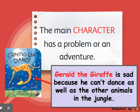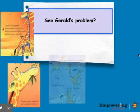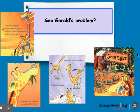The main character has a problem or an adventure. Gerald the giraffe is sad because he can't dance as well as the other animals in the jungle. Gerald was a tall giraffe whose neck was long and slim, but his knees were awfully crooked and his legs were rather thin. He was very good at standing still and munching shoots off trees, but when he tried to run around he buckled at the knees.